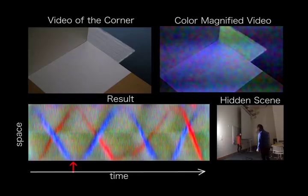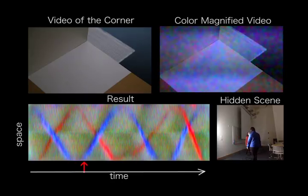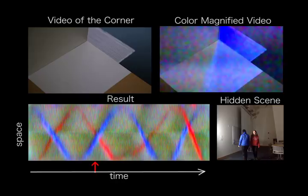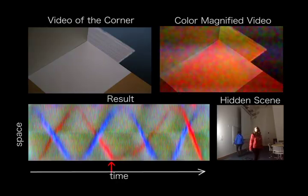Note that in this movie, we are able to reconstruct the angular position of the blue and red people just by looking at the color changes in the light reflected from around the corner.